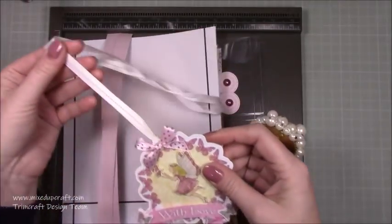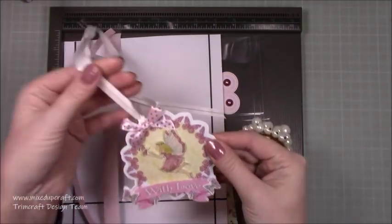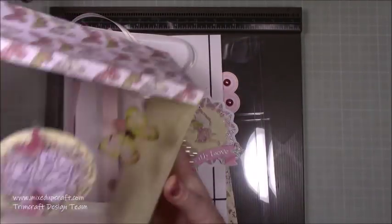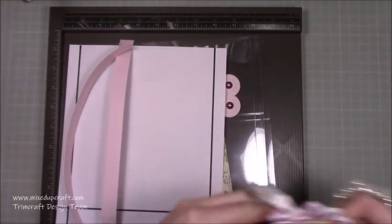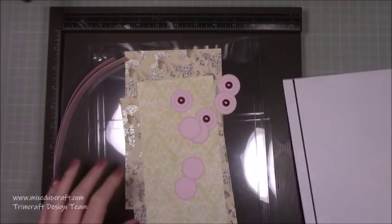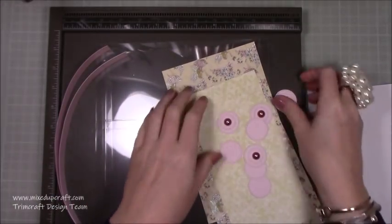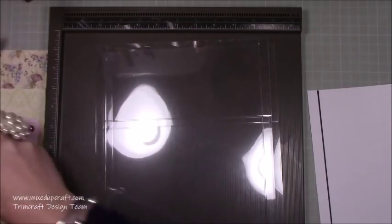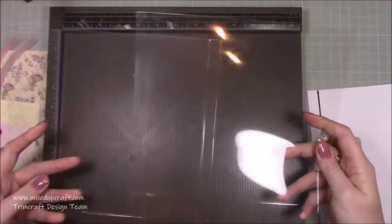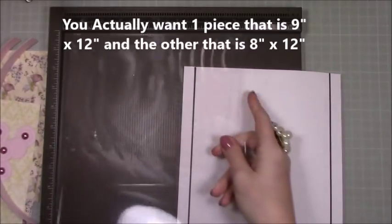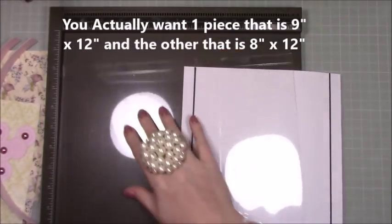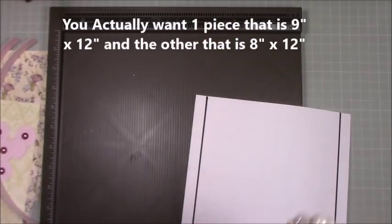I've gone ahead and prepared my topper piece here. This time I'm going to have this as a gift tag hanging from the bag. I've got a template just because we're working with acetate. I can show you what I'm doing on this white piece here. You want two pieces that are 9 by 12. Along the 9 inch side, you're going to score at half an inch.